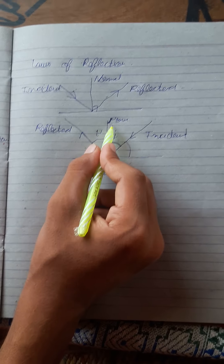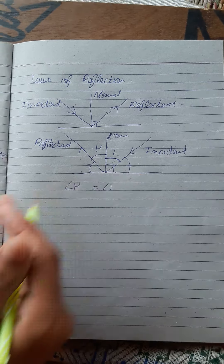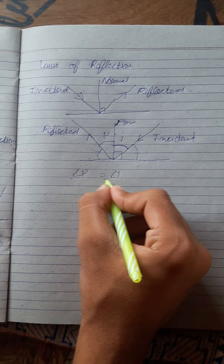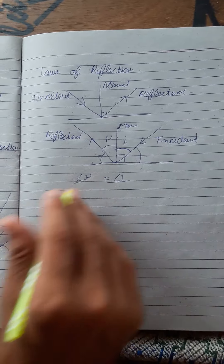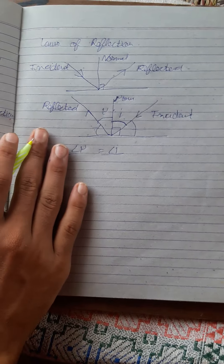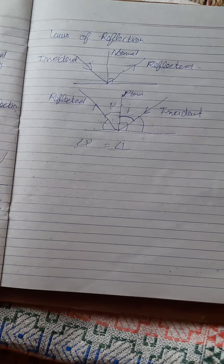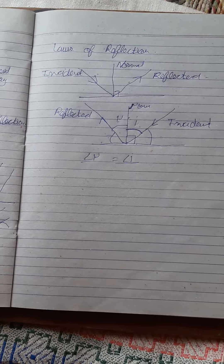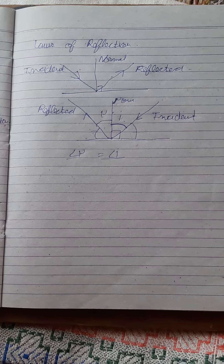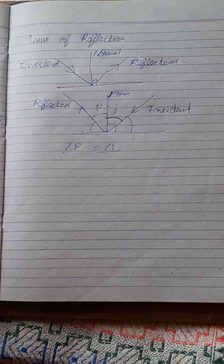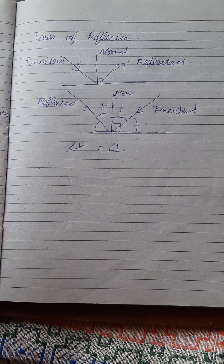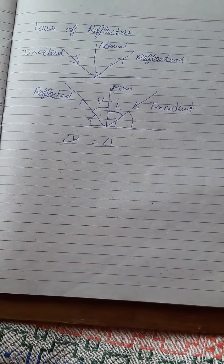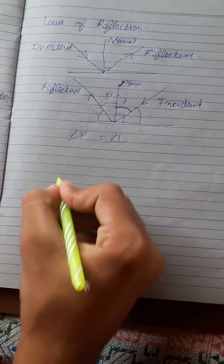Why is the angle of reflection always equal to the angle of incidence? This can be explained with Fermat's principle of least time. According to this principle, light is always in a hurry — it takes the path that requires the least time. This can be understood with the example of a crow and a rat.